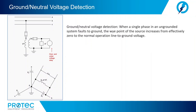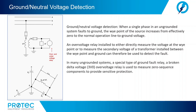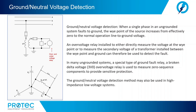When a single phase in an ungrounded system falls to ground, the Y point of the source increases from effectively zero to the normal operating line-to-ground voltage. An overvoltage relay installed to either directly measure the voltage at the Y point or to measure the secondary voltage of a transformer installed between the Y point and ground can be used to detect the fault. In many ungrounded systems, a special type of ground fault relay — a broken delta voltage overvoltage relay — is used to measure zero sequence components to provide sensitive protection. The ground neutral voltage detection method may also be used in high impedance, low voltage systems.